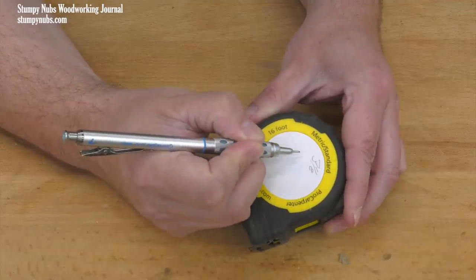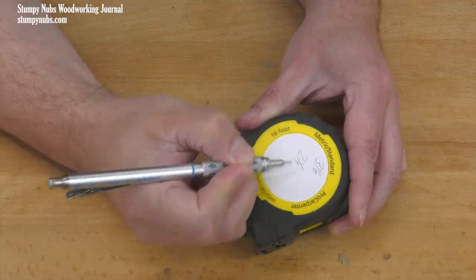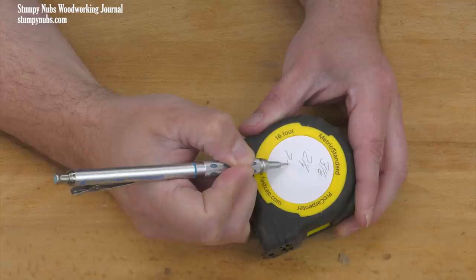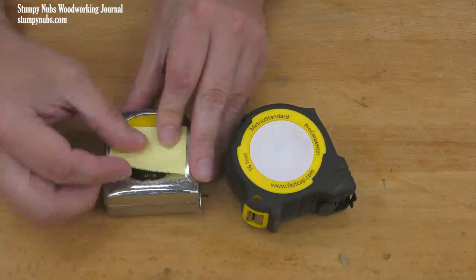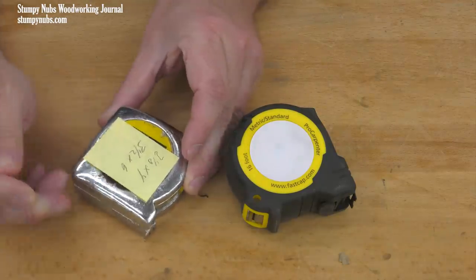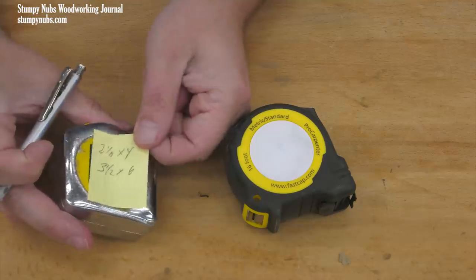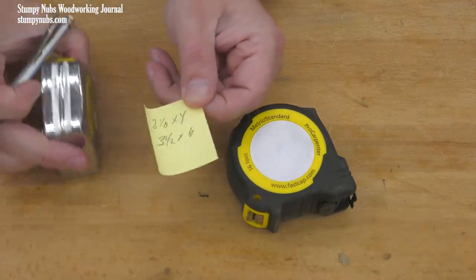Another way to keep track of measurements is to mark them on the side of the tape's case. My tapes have pencil-friendly surfaces that make that easy, but lacking that, you could just pop on a post-it note. I kind of like that idea because the note can then be transferred to another tool like the table saw if you don't need the tape there.